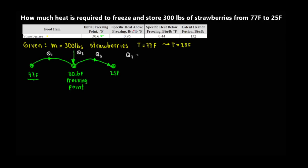The total heat equals Q1 + Q2 + Q3. Q1 is sensible heat — there is a change in temperature from 77°F to the freezing point. Q2 is latent heat — there is no change in temperature; freezing occurs at a constant temperature at the freezing point. Q3 is again sensible heat — there is a change in temperature from 30.6°F down to 25°F. So it's sensible, latent, sensible.